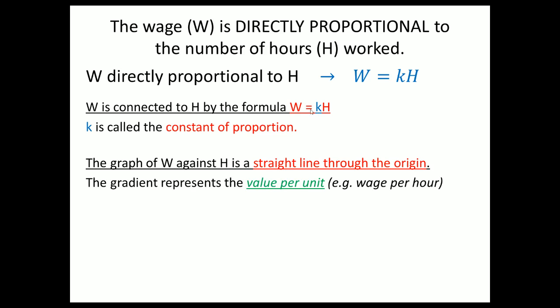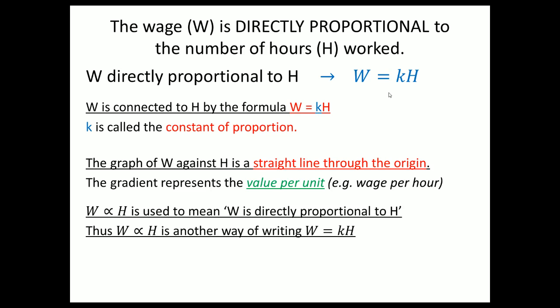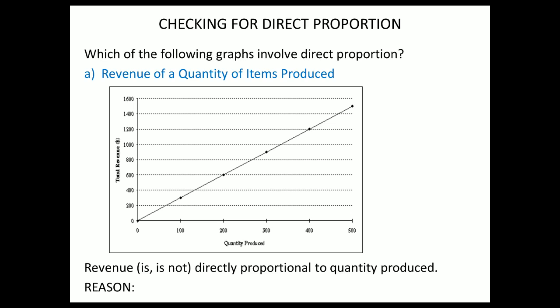So it's going to be: y value equals x value multiplied by some value k, and k is called the constant of proportionality. The constant of proportion is just a value — it's how many times bigger or smaller the x value is than the y value. The graph of w against h is a straight line through the origin if it's directly proportional. The gradient represents the value per unit, and we can write 'w varies as h' using the notation for direct proportion.